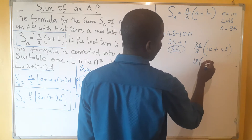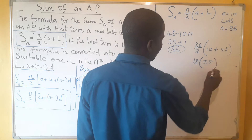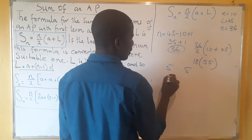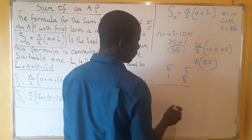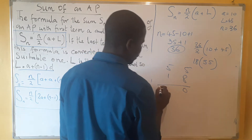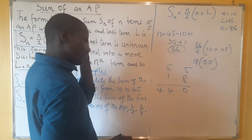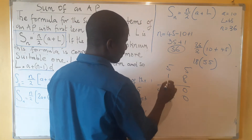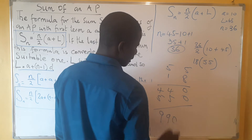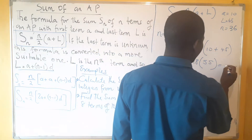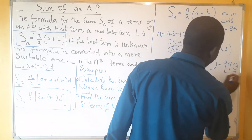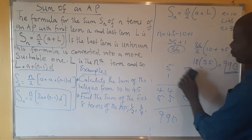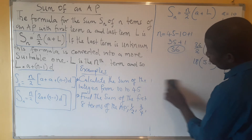Now we carry out the multiplication: 18 multiplied by 55. Working this out — 18 times 5 gives 90, and 18 times 50 gives 900 — so we get 990. Therefore, the sum of the integers from 10 to 45 is 990.